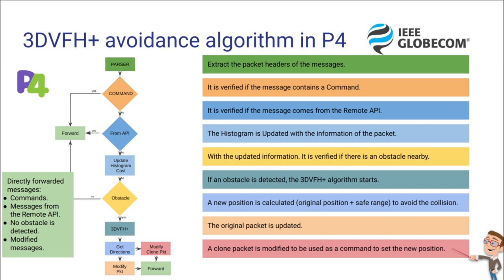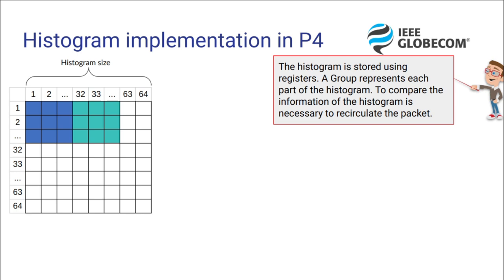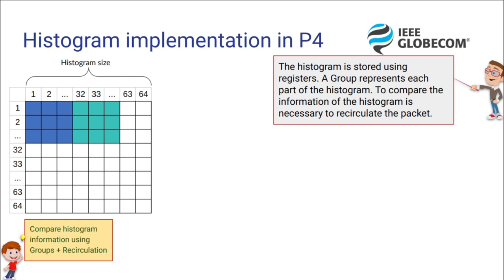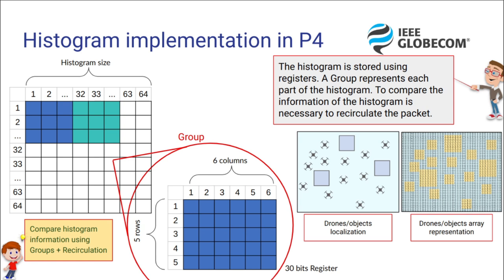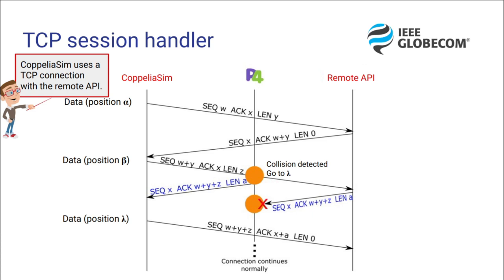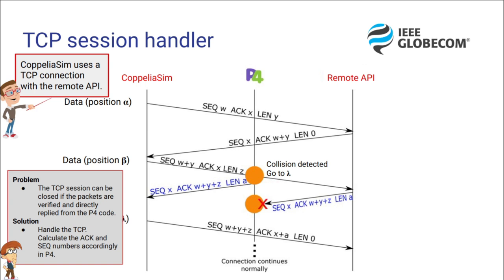Our implementation uses a histogram, which is stored using registers. A group represents each part of the histogram. To compare the information of the histogram, it is necessary to recirculate the packet. This shows the localization of the objects and drones and the representation of information stored in the histogram. CoppeliaSim uses a TCP connection with the remote API. Here we have a challenge: the TCP session can be closed if the packets are verified and directly replied from the P4 code. So we need to handle the TCP session, calculating the ACK and sequence number accordingly in the P4.